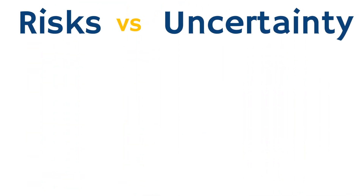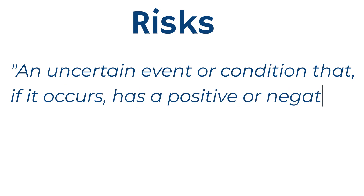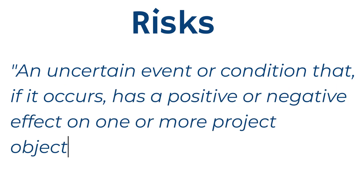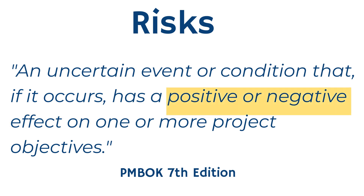Now we know the difference between a risk and an uncertainty. We can define a risk as an uncertain event or condition that, if it occurs, has a positive or negative effect on one or more project objectives. This is the definition as mentioned in PMBOK 7th edition, and it is one of the most comprehensive definitions because it encompasses all characteristics of a risk: it is an uncertainty that has a probability to occur and a measurable impact on project objectives. This impact can be positive or negative. Risks can also be events or conditions due to ambiguity, complexity, or volatility.